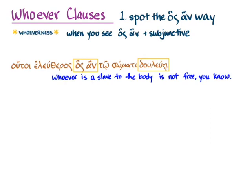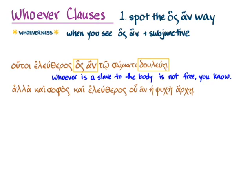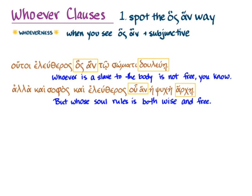But the relative pronoun is not always in the nominative case. So sometimes you'll have a sentence like this. Again, we've got hoss-an and the subjunctive — it's not hoss here, it's hoss-an — but we have the relative pronoun, an, and a subjunctive verb. And so we can translate it: 'but whose soul rules' — with the possessive genitive case of the relative pronoun — 'is both wise and free.' We don't know who that is; it's indefinite, but in any instance where that's true, that person is wise and free.